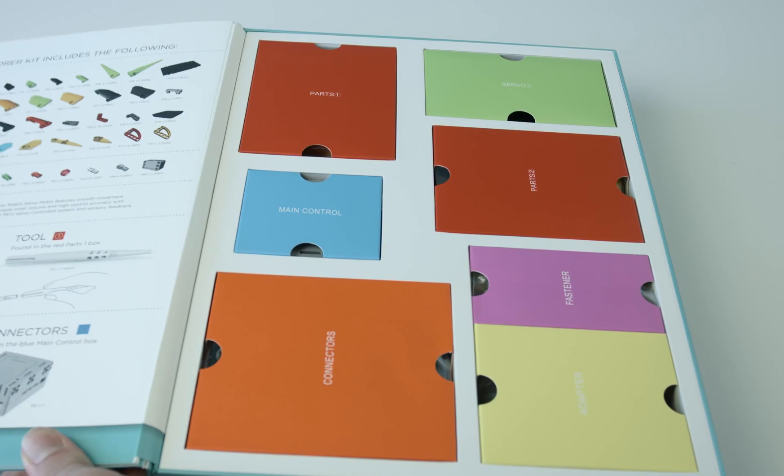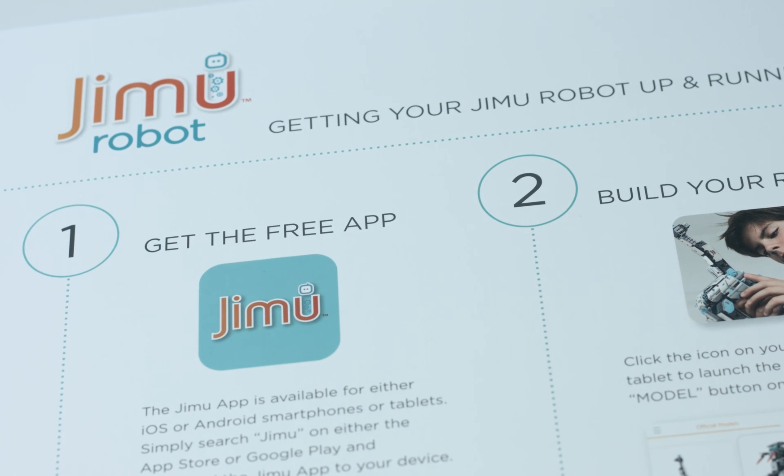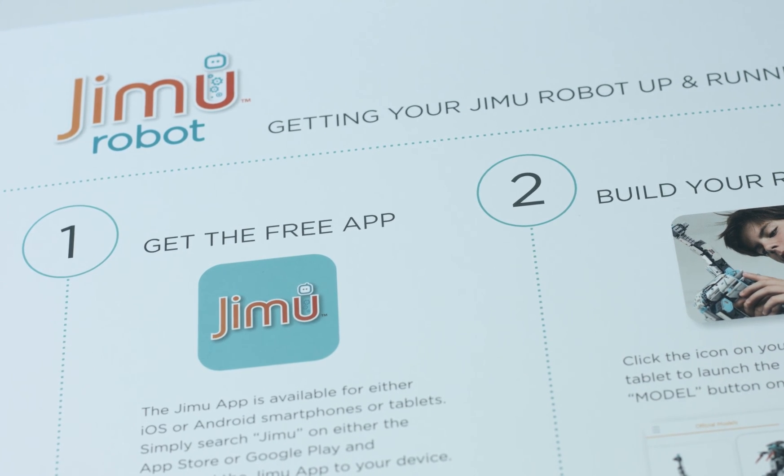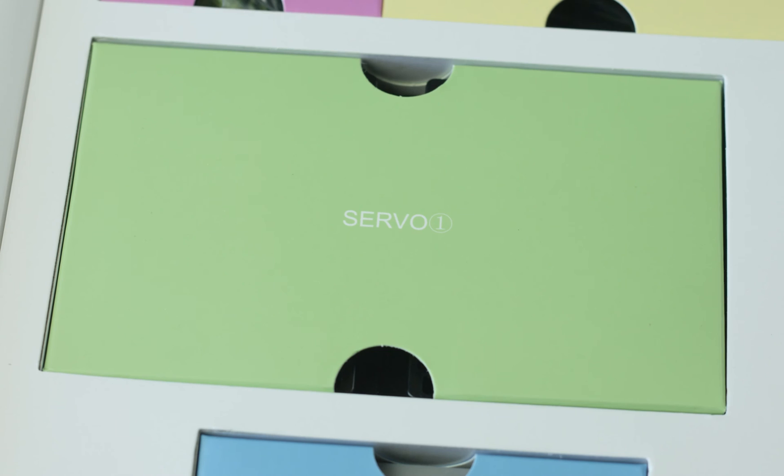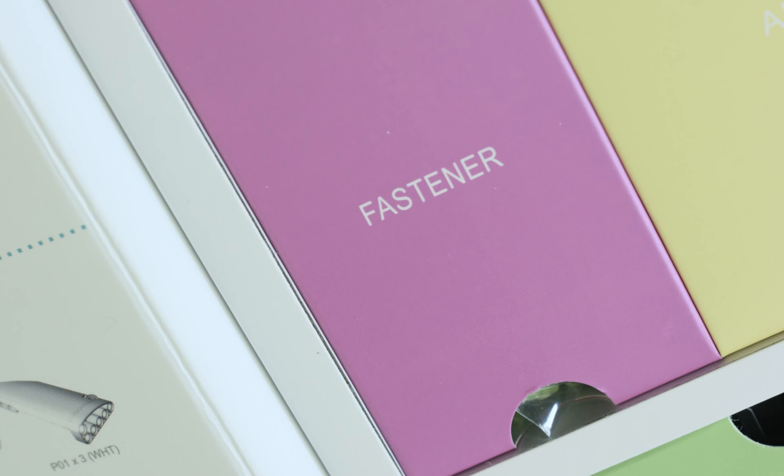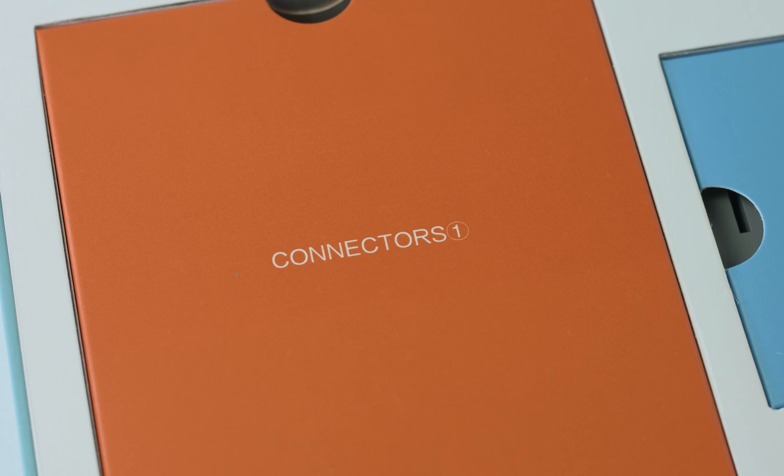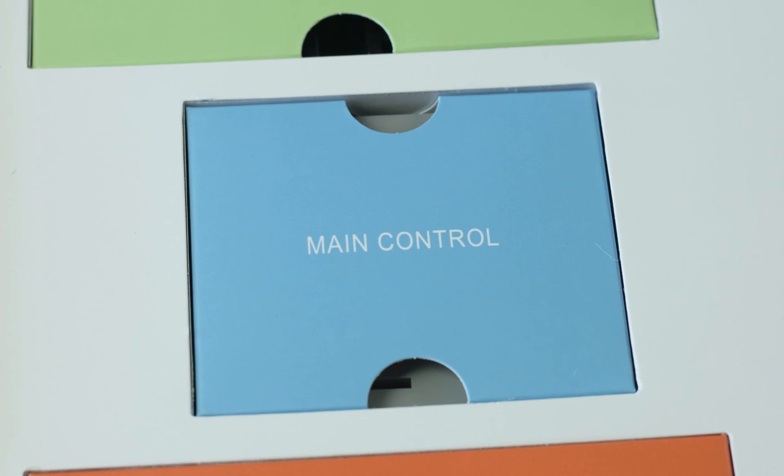Open up this strong reusable box to find everything you need to get started. Inside you'll find an attached easy to follow user guide, two boxes of parts, seven robotic servo motors, a box of fasteners and wires, connectors, a charging adapter, and a main control box.